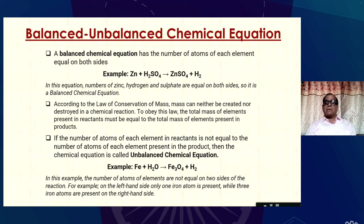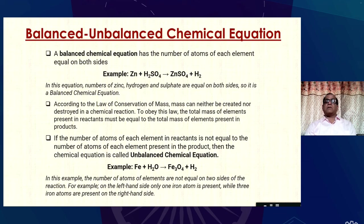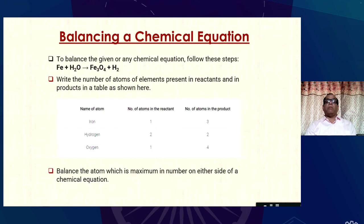For example, iron reacts with water to form ferric oxide and hydrogen. In this example, the number of atoms of elements are not equal on both sides. For example, the left-hand side contains only one iron atom, whereas three iron atoms are present on the right-hand side.